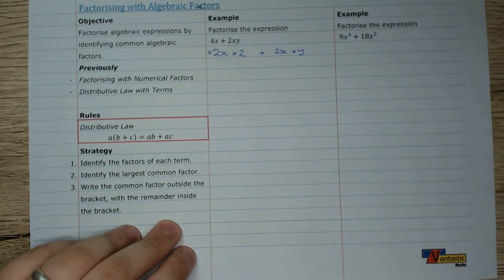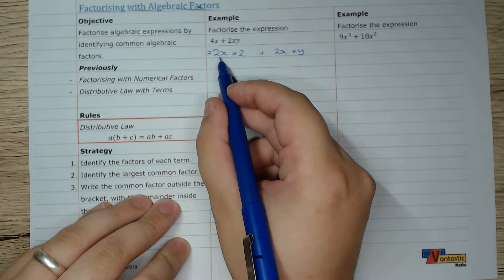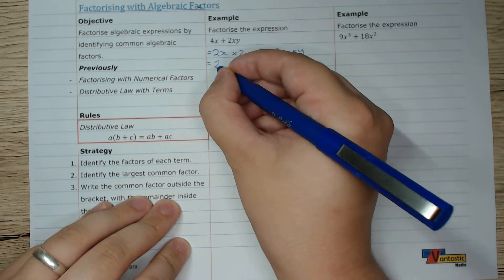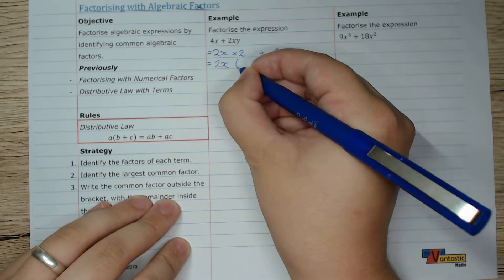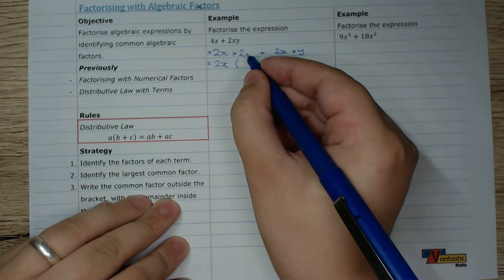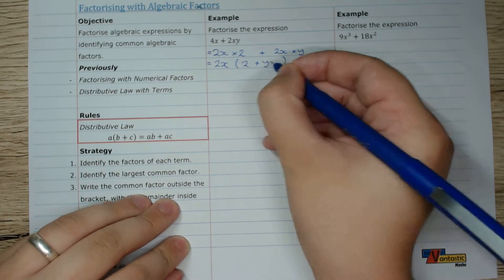You can check that if you want. And I can tell I have this common factor 2x and 2x. So what I can do is I can pull 2x out to the front of a set of brackets like we did before. And put the remainders 2 plus y inside of the brackets to factorize it.